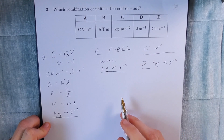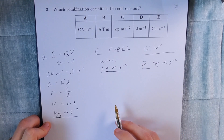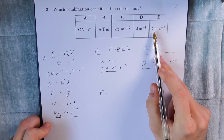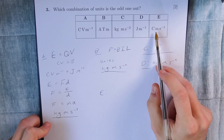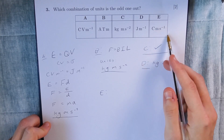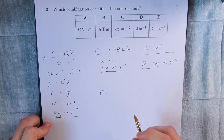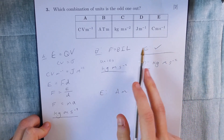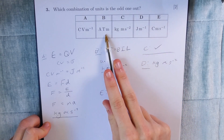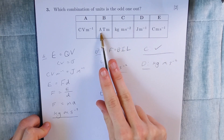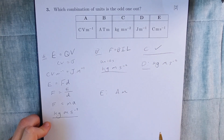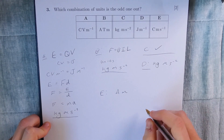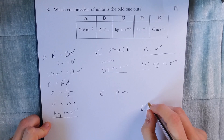To confirm: E is coulomb meters per second. Coulombs per second is equivalent to current or amps, so the units for E are equivalent to amp meters. Comparing B and E: one is amp tesla meters and the other is amp meters — clearly different things. Since B matches all the other four, E must be a different unit altogether. Therefore, the odd one out is E.